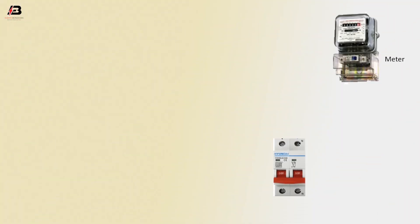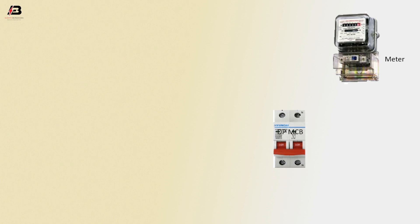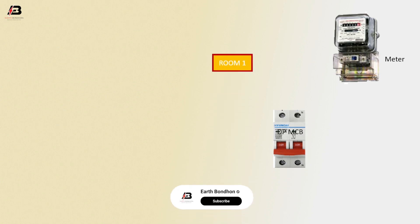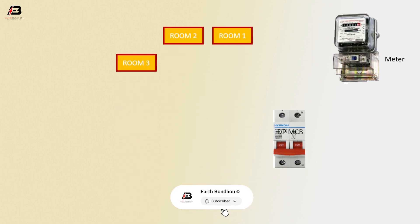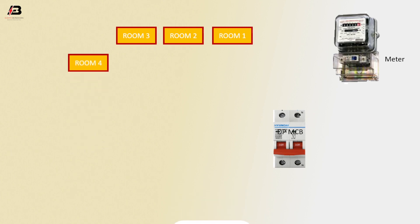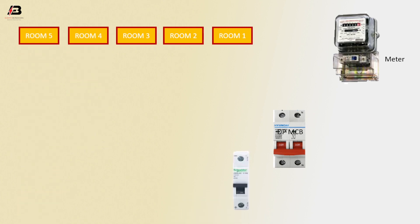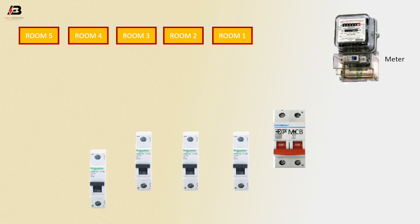So viewers, let's start. Energy meter. Double pole MCB circuit breaker. Room 1, 2, 3, 4 and room 5. Single pole — total 5 circuit breakers.